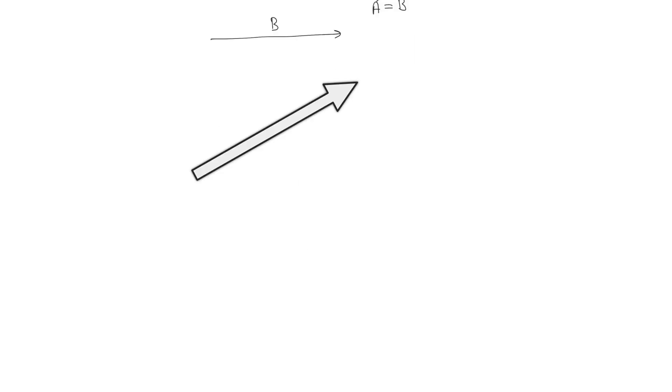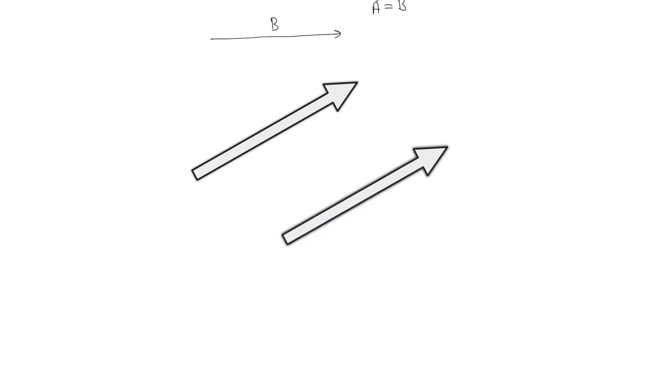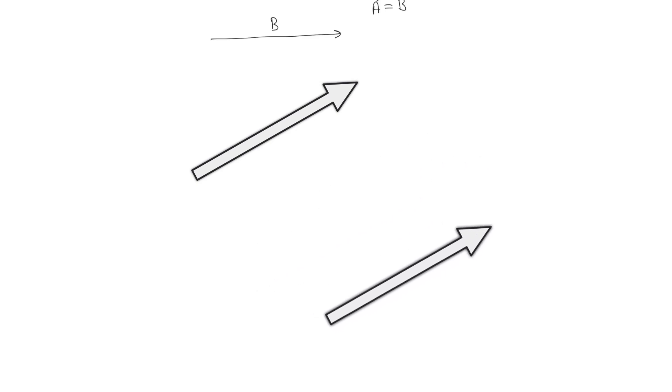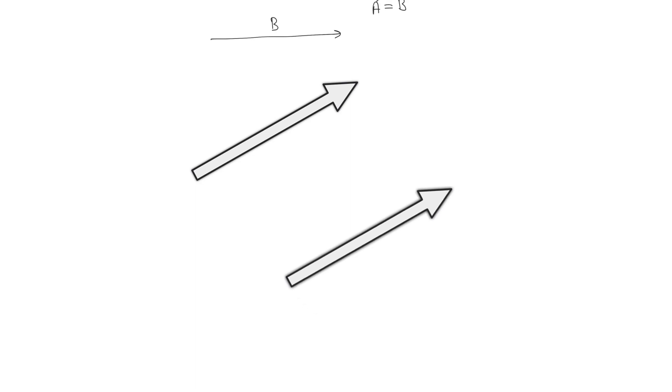Also remember that if you are having a vector and you displace it parallel to itself — moving it to another position without rotating it — then those two vectors are still equal. If a vector is displaced parallel to itself, it remains equal to itself. So this A vector and this B vector are equal.